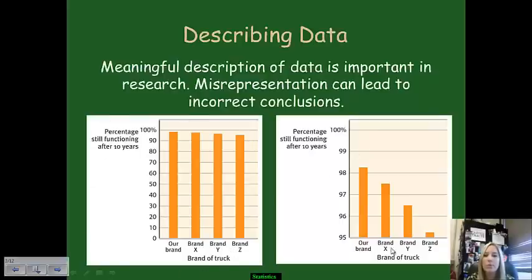We have a breakdown of percentage of certain brands of trucks still functioning after 10 years, and then our brands of trucks down here. It looks very different to represent them in this manner over to the left because they all look fairly similar, as opposed to narrowing in and focusing in on just the percentage from 95% up to 100. It looks very different in its representation on the left as opposed to the right. So it's very important that we don't come to misrepresent data because it can very much lead to incorrect conclusions.